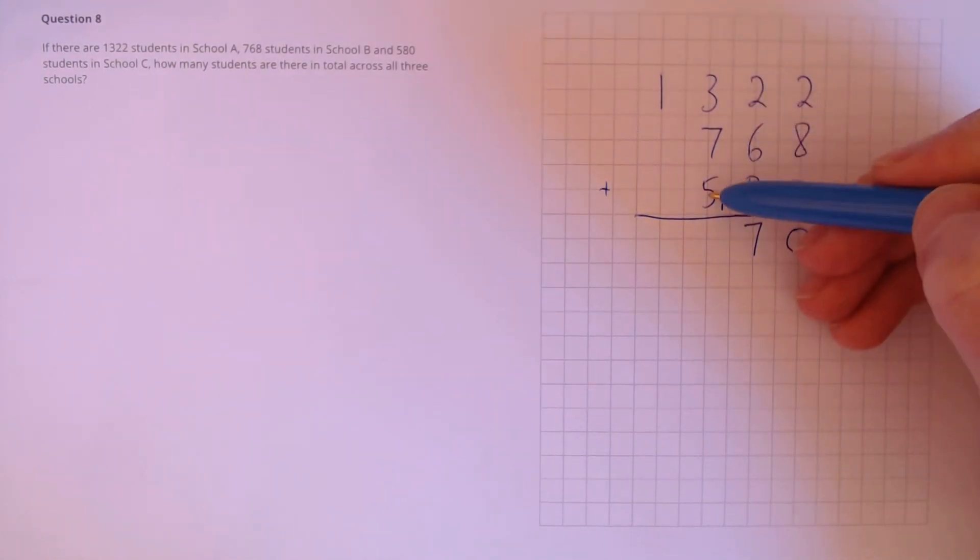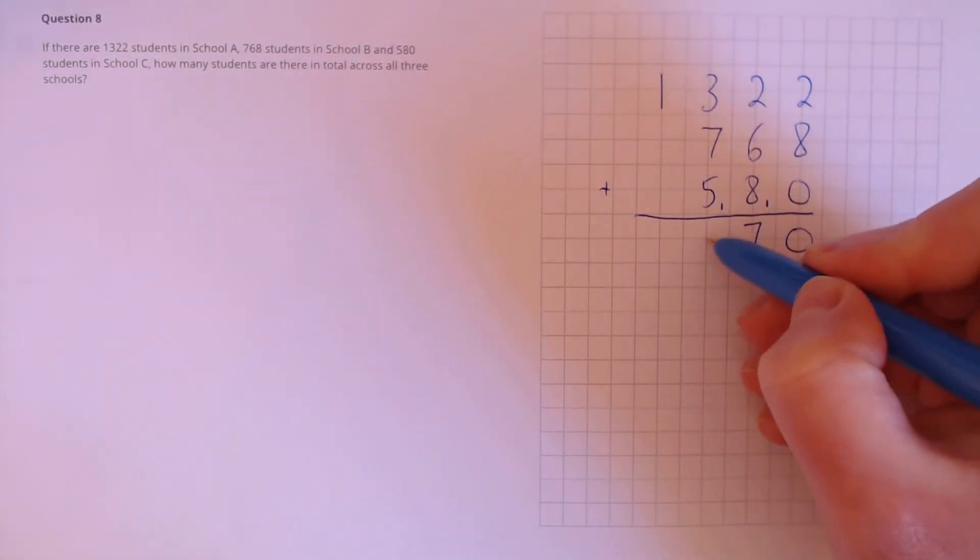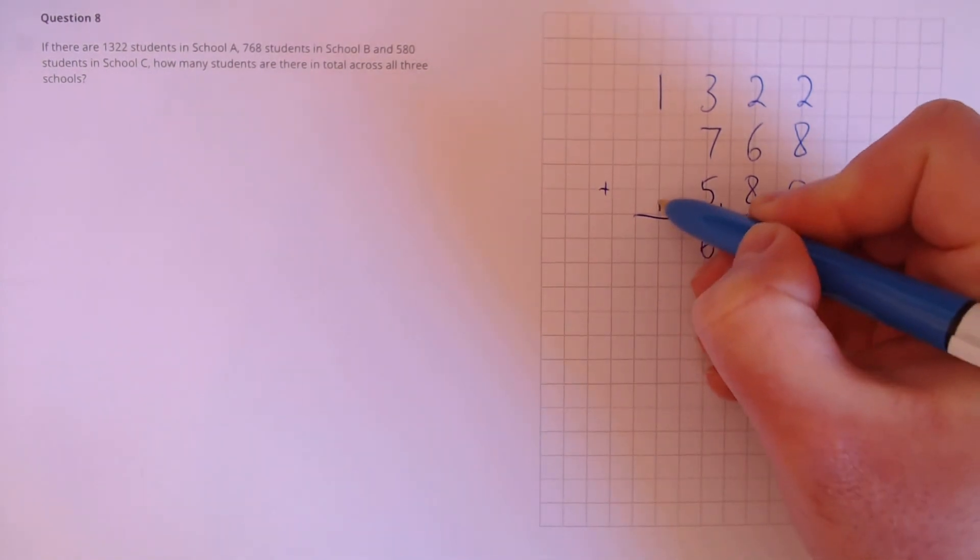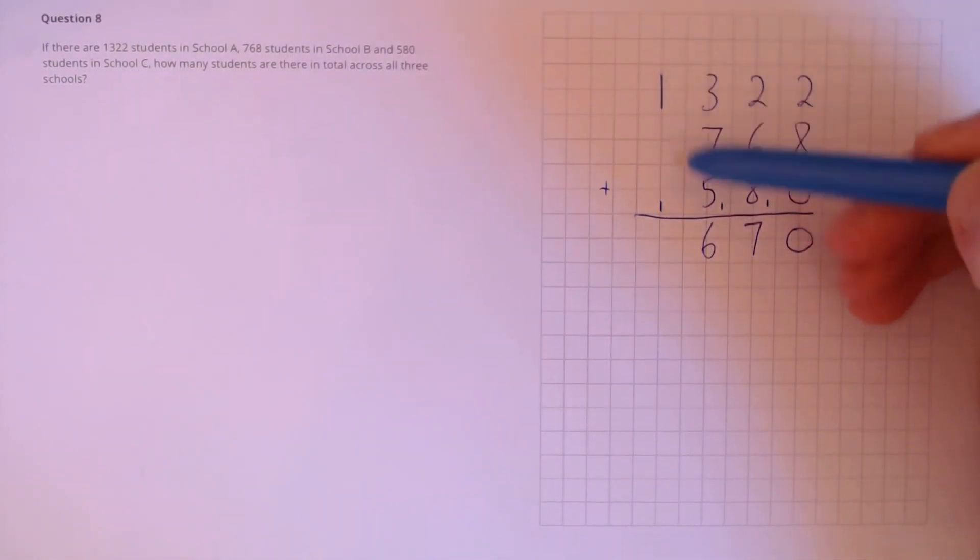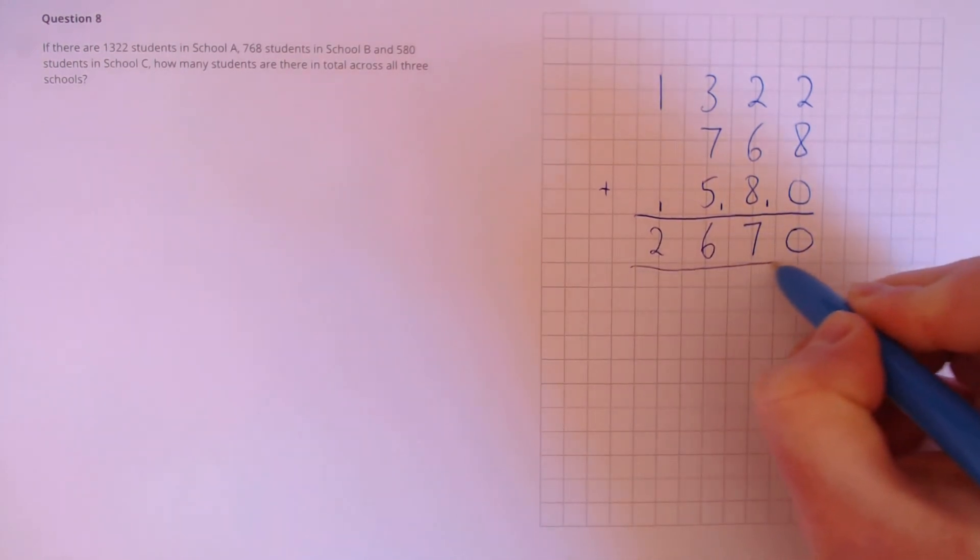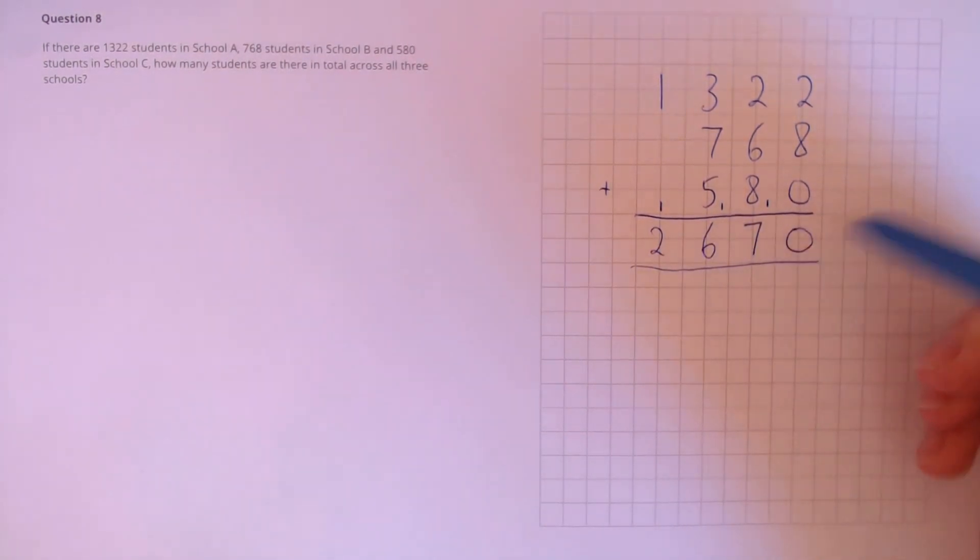3 plus 7 is 10, plus 5 is 15, plus 1 is 16. So, we have 6 and 1 to carry over. And finally, 1 plus 1 is 2, which gives an answer of 2,670.